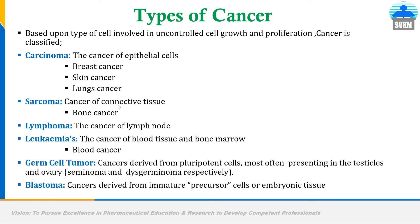Sarcoma is cancer of connective tissue, and an example is bone cancer. Lymphoma is cancer of the lymph nodes. Leukemia is cancer of blood tissue and bone marrow; an example is blood cancer. Germ cell tumor is a type of cancer derived from pluripotent cells and most often presents in the testicles and ovaries. The germ cell tumor of the testicle is called a seminoma, and the germ cell tumor of the ovary is called a dysgerminoma.